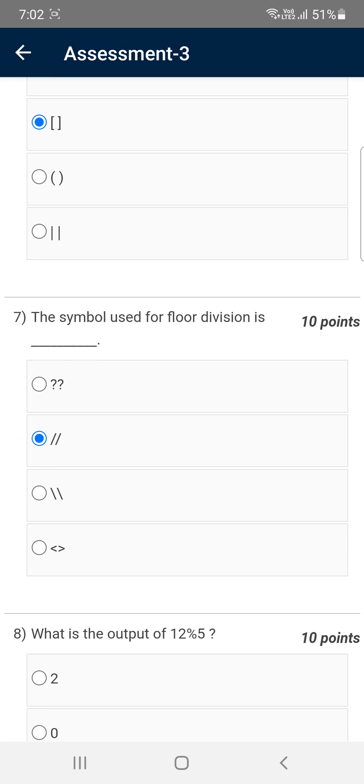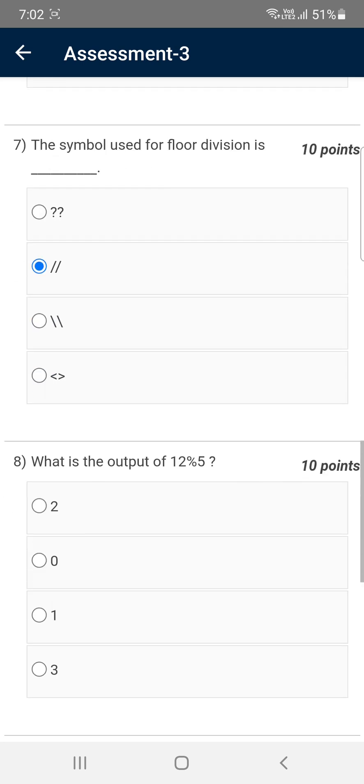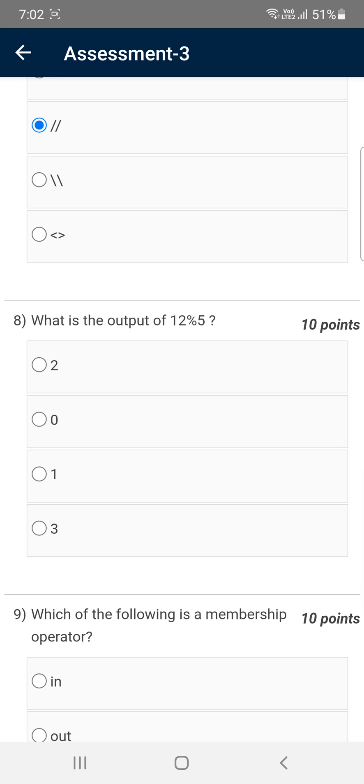Moving on to the eighth question: What is the output of 12 modulus 5? We know that modulus means remainder, so when we divide 12 by 5 we will get 2 as remainder because 5 times 2 is 10, so 2 will be remain after subtracting 10 from 12. So the answer is first option, 2 is the correct answer.